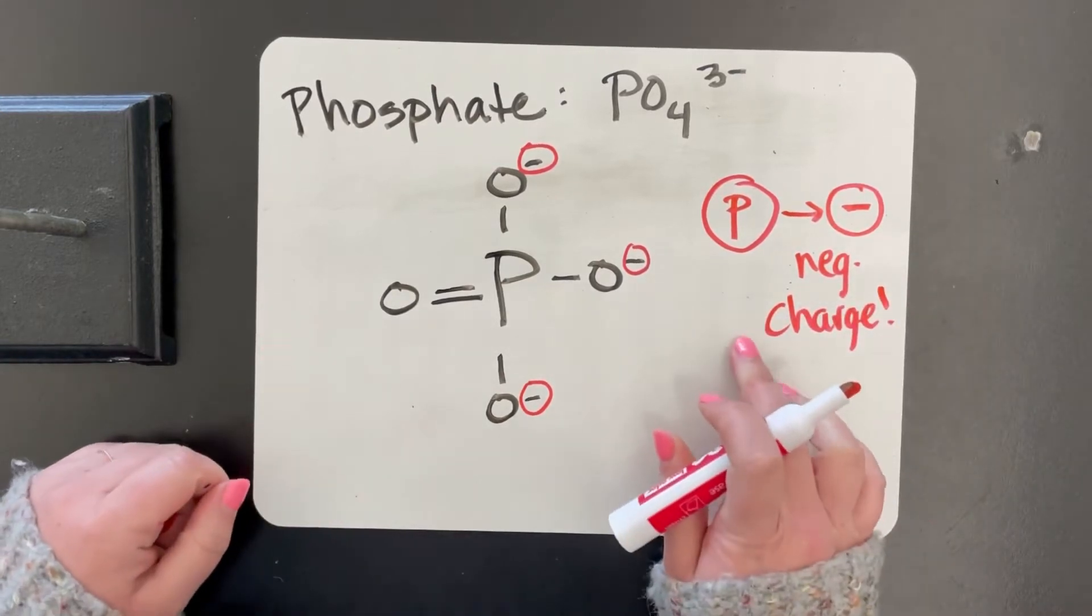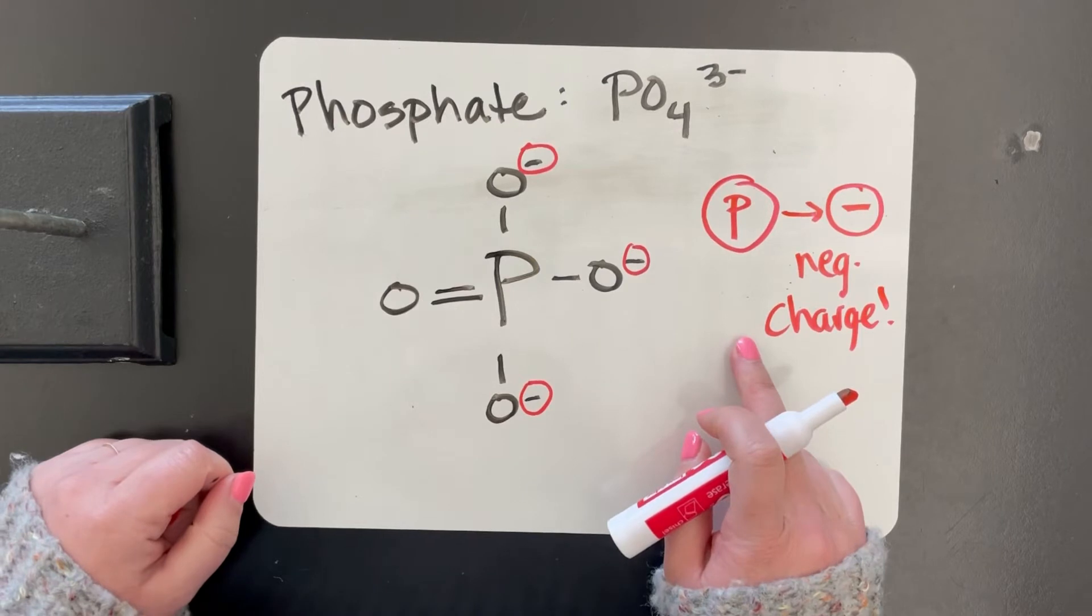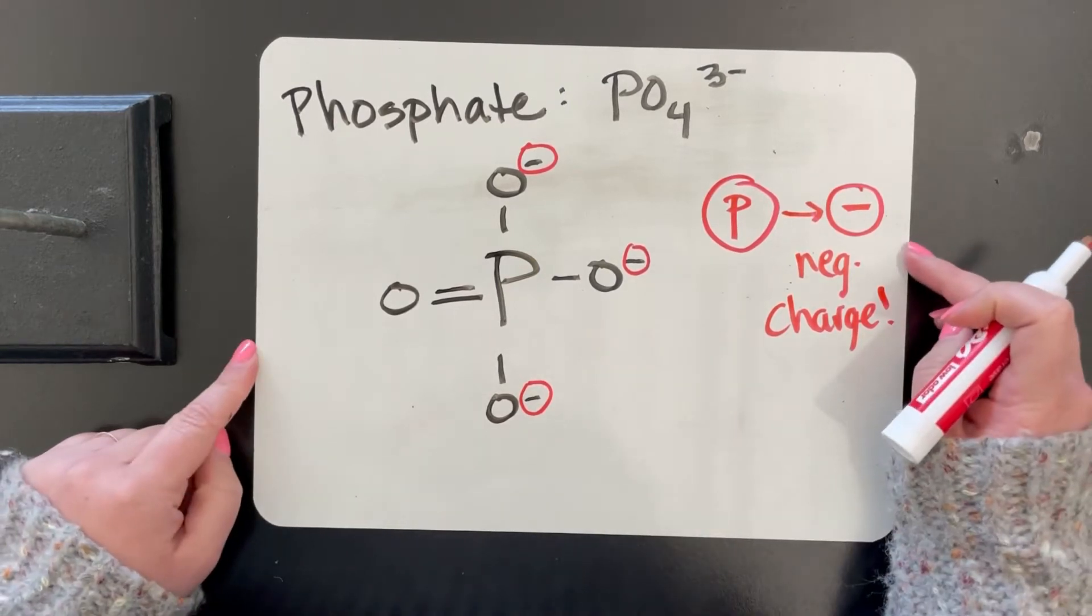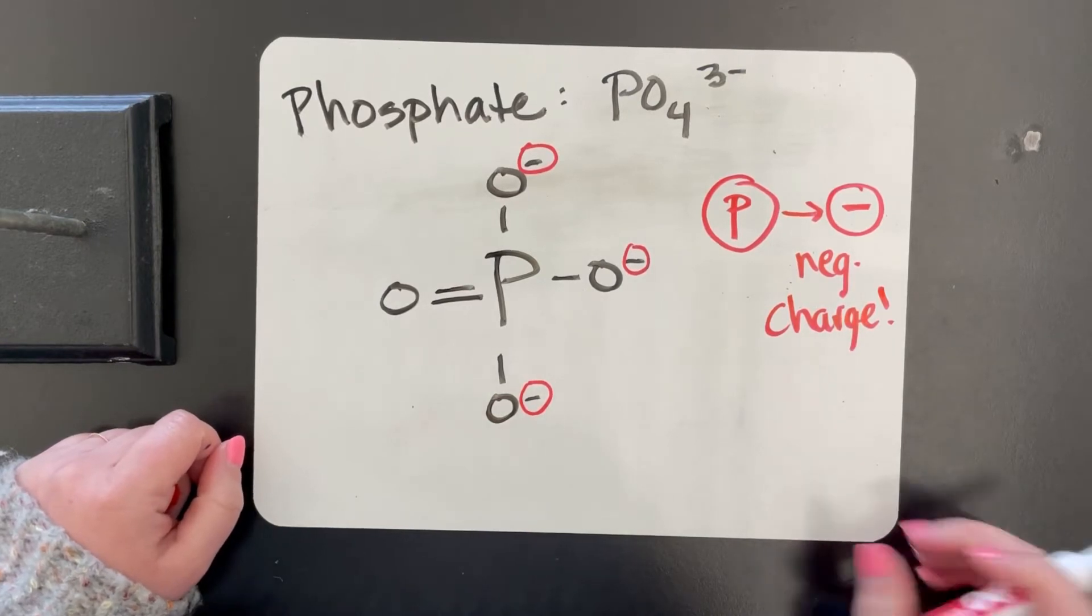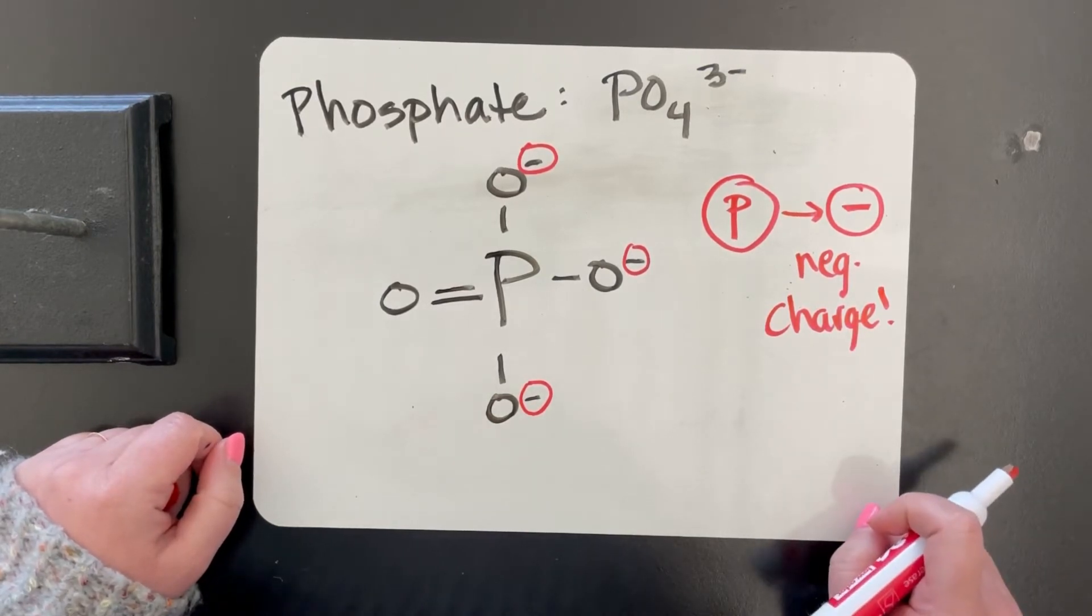So if we're adding phosphate to a protein, we are adding a bunch of negative charges to it, and that's going to change how the protein folds, how it's shaped, and that's going to change the protein's function. Let's look at an example.